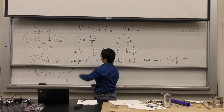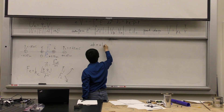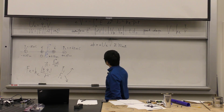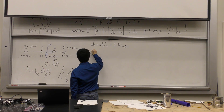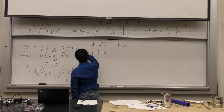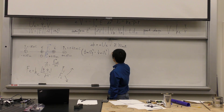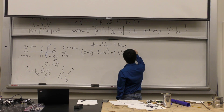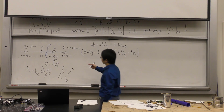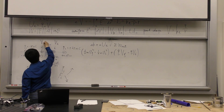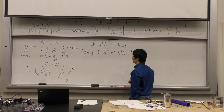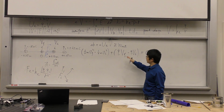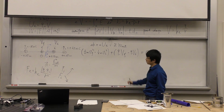Let's set up conservation of energy: delta K plus delta U_E equals the sum of all external work. Now set up the two terms on the left. Only one charge is moving, so there's only one term for the proton in the kinetic energy. For the potential energy term, it's Q times V_final minus Q times V_initial, where big V is the electric potential. On the right-hand side, the electric forces are already accounted for in the potential energy terms, so the external work is zero.